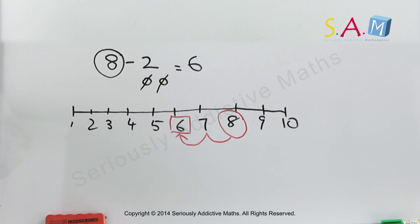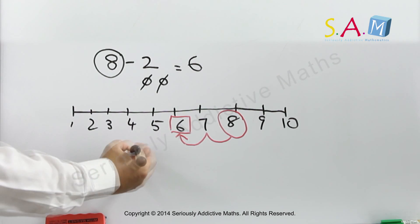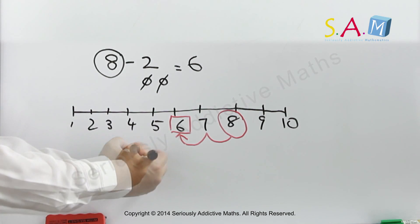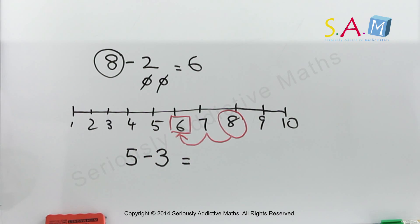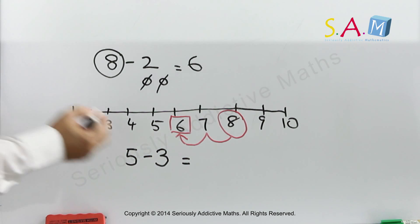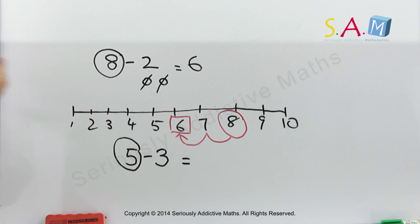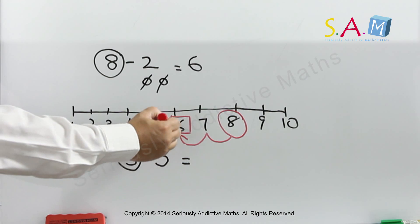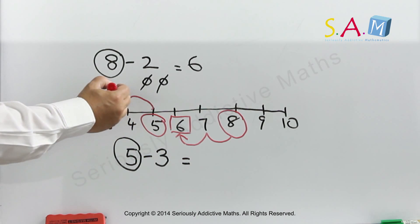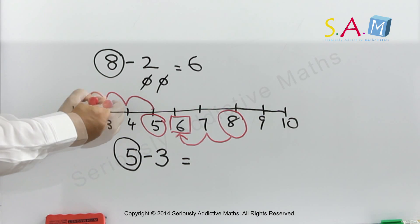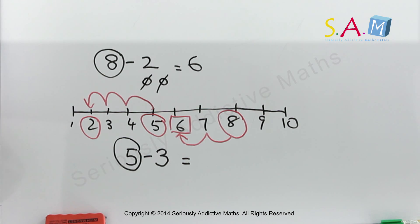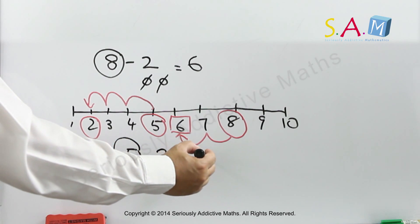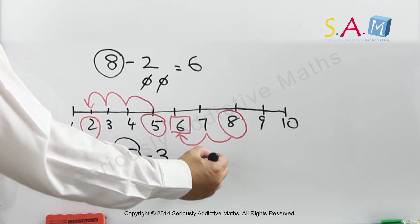Another example: say we have 5 take away 3. Counting on backwards, we will start with the 5: 5, 4, 3, 2. So 5 counting on backwards, take away 3, gives you the answer as 2.